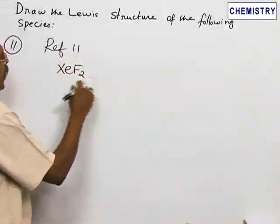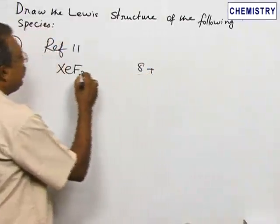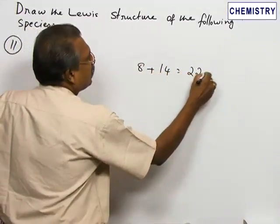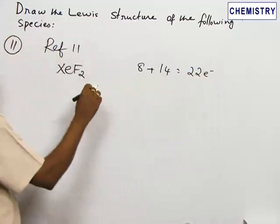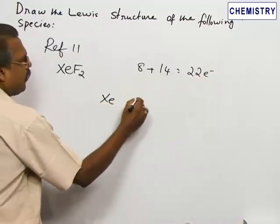Number 11, xenon difluoride. Eight electrons from xenon and seven plus seven, fourteen electrons from fluorine, so 22 electrons total. These need to be distributed so that each atom gets an octet. Xenon at the center, fluorine on either side.